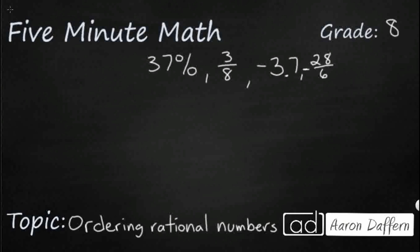So you might get a problem that looks something like this. You've got a list of numbers: 37%, 3 eighths, negative 3 and 7 tenths, negative 28 sixths, and you need to put this in order from, let's just pick, least to greatest.